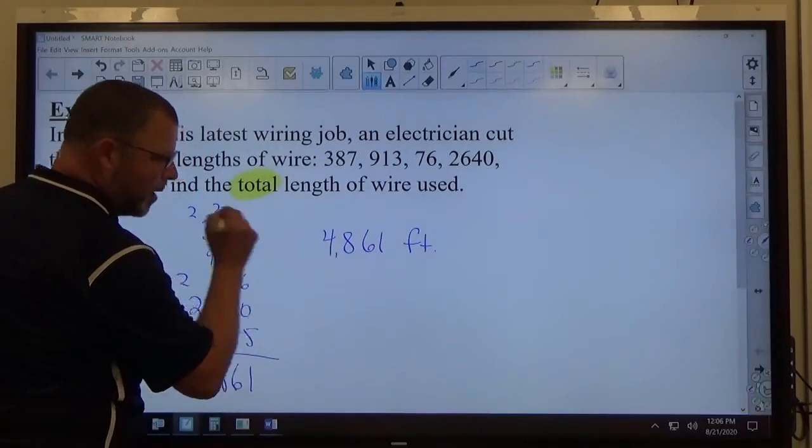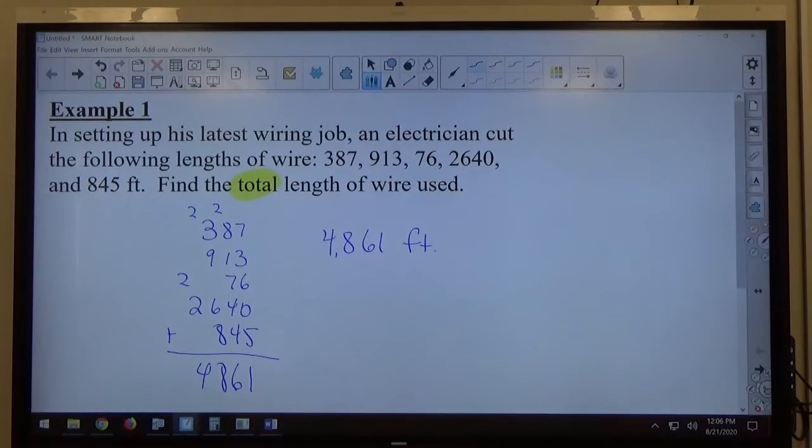Now, officially, you're supposed to have a comma after the 4. If you write it without the comma, I'm not going to mark it wrong. But, the whole point of the commas is to group things in hundreds. You have the hundreds group, the thousands group, the millions group.